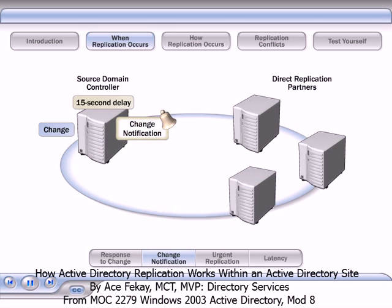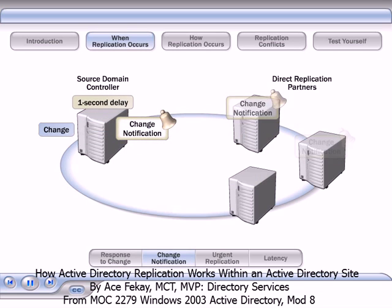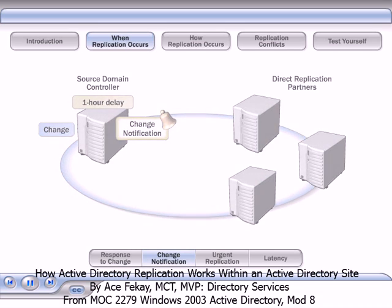Both the first 15-second notification interval and the subsequent 3-second notification intervals are configurable. However, if you reduce the interval to very small increments, such as 1 second, network traffic increases and performance deteriorates. If you increase the interval to a very large interval, such as 1 hour, you increase latency and the likelihood of replication conflicts.